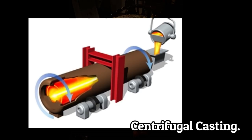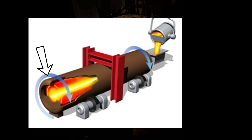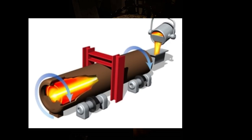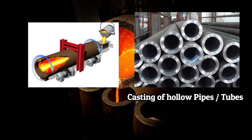Centrifugal casting is one of the most important types of casting process in which the mold is rotated rapidly about its central axis during casting as the metal is poured and solidified. This process is widely used for casting hollow pipes, tubes, and other symmetrical parts.